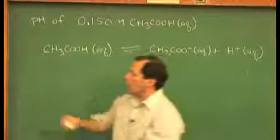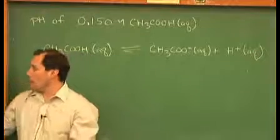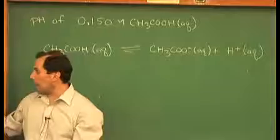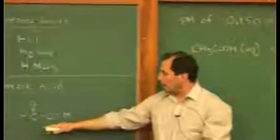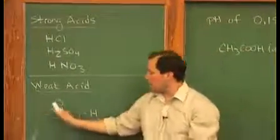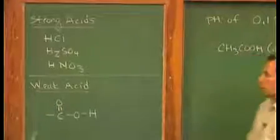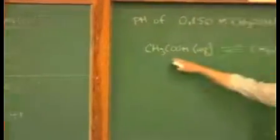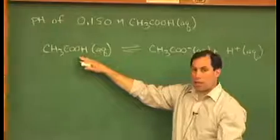So on the center board here, I have a list of three strong acids and one weak acid, and the weak acid is a COOH group, and the COOH group can be attached to anything at all, anything that we want. So CH3 in this case is attached to COOH.